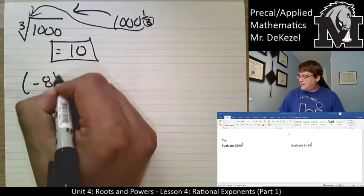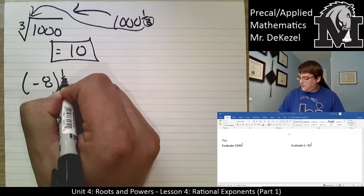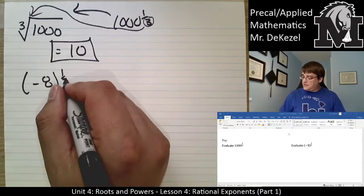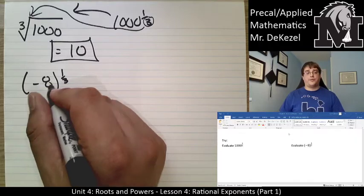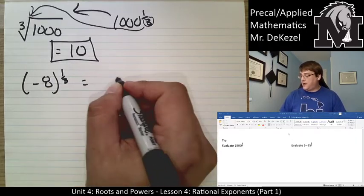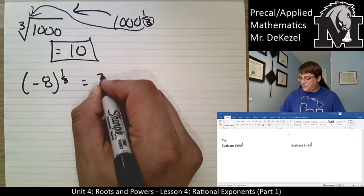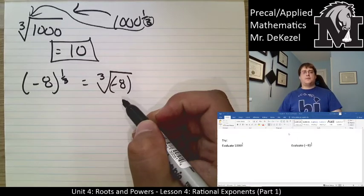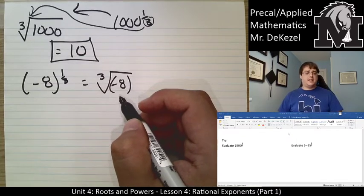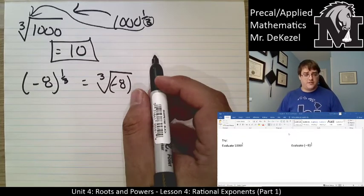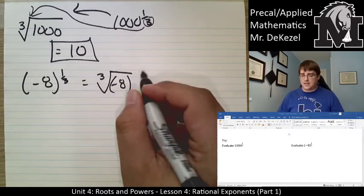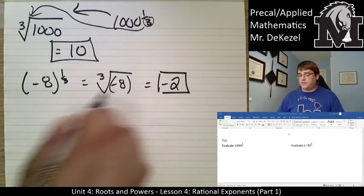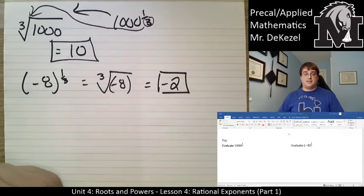We have negative eight to the power of a third. That means this is the third root of negative eight, because the three is on the bottom. Two times two times two gets me eight, but I need the negative version — negative two times negative two times negative two — so the third root of negative eight is negative two.